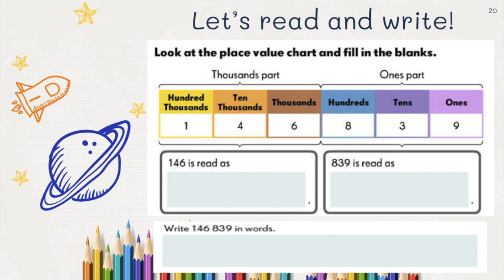Let's practice how to read and write numbers. When reading numbers, we start from left to right. So this portion is read as 146,839. This part is read as 839. So in words, it can be written as 146,839.